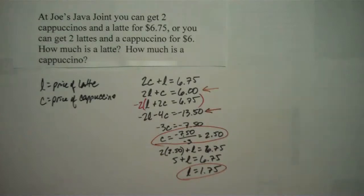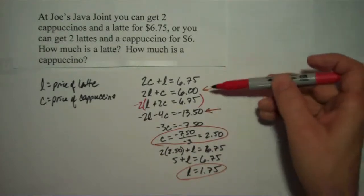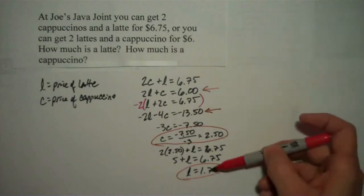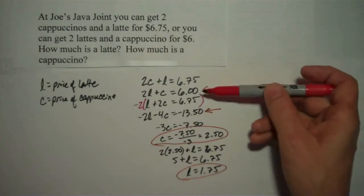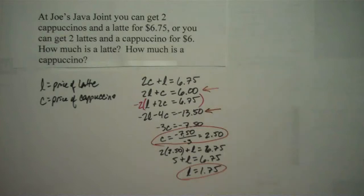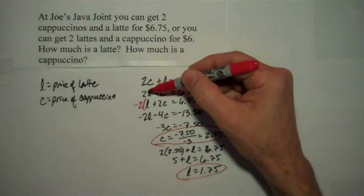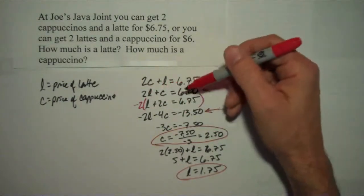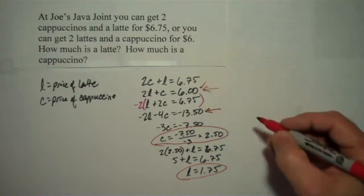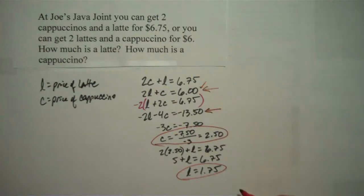Let's see if that could possibly be true. Now, I just used the top line to solve for L. So let me use the next equation and see if I can replace L with 1.75 and C with 2.50 and see if it works. 2 times L, that would be 2 times 1.75. That's going to be 3.50, $3.50, plus $2.50. Sure enough, it equals 6. That means my answers work. And we are done. A cappuccino costs $2.50, and a latte costs $1.75.